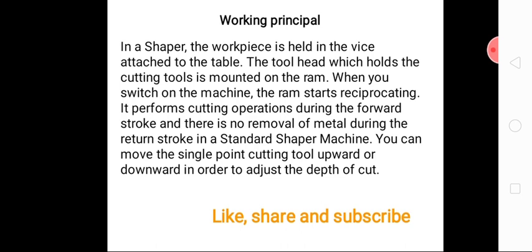In the shaper machine, the workpiece is held in the vice tied to the table. The tool head, which holds the cutting tool, is mounted on the ram. When we switch on the machine, the ram starts reciprocating. It performs the cutting operation during the forward stroke, and there is no removal of metal during the return stroke.